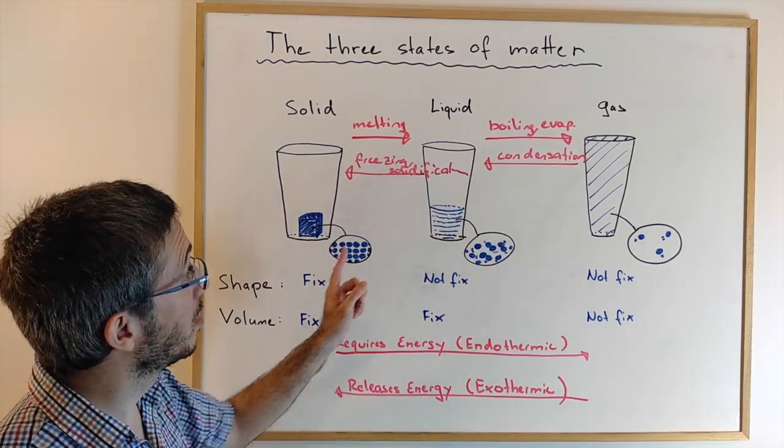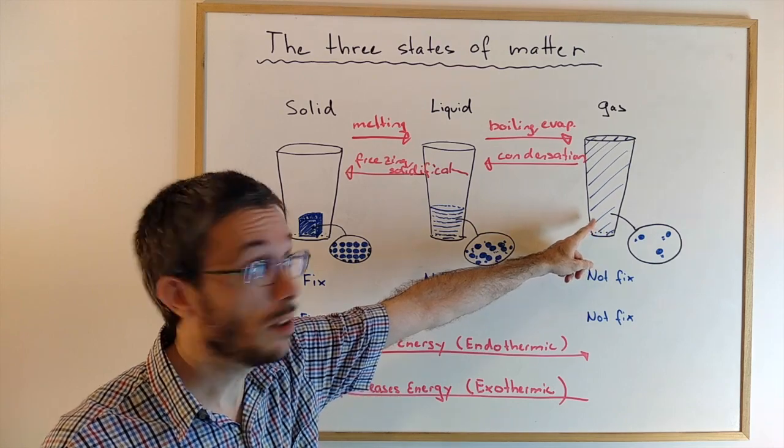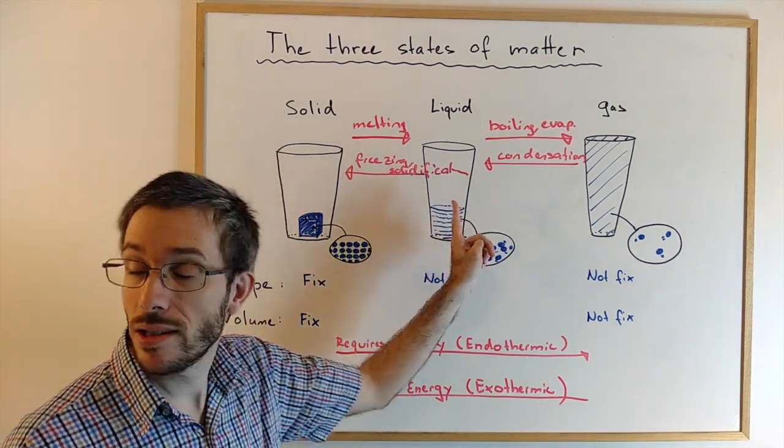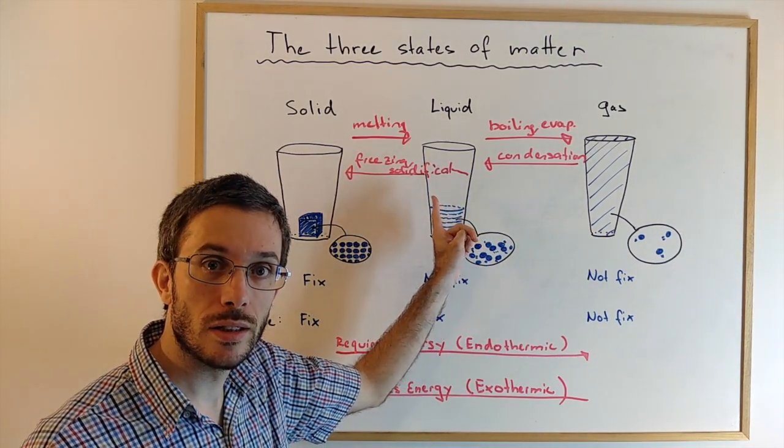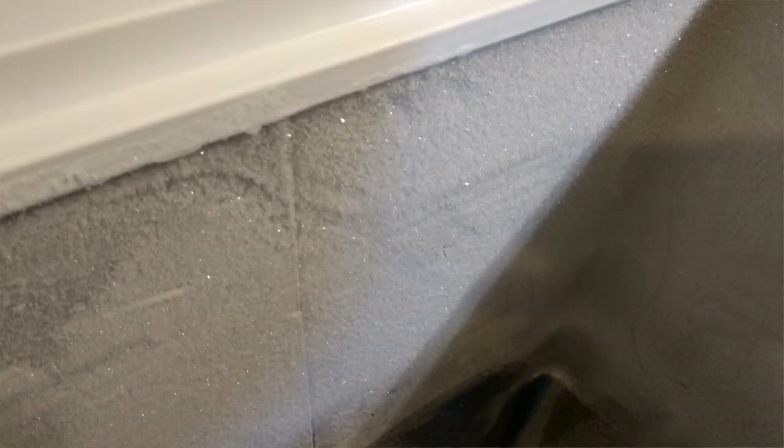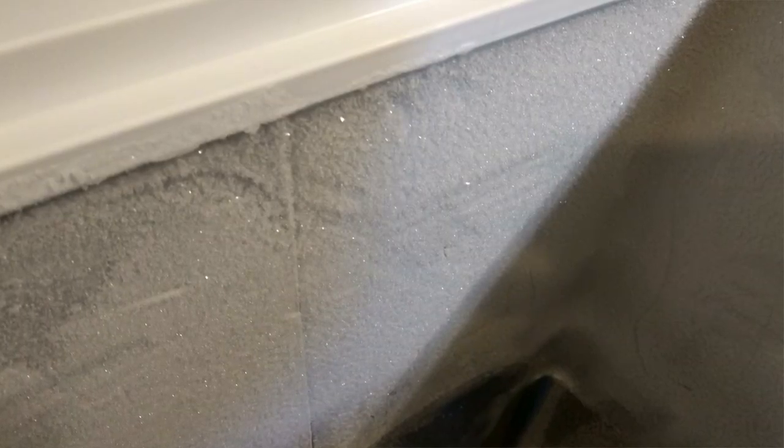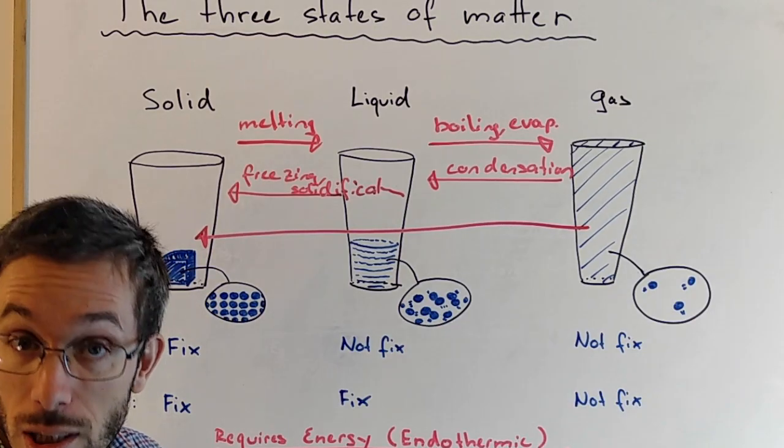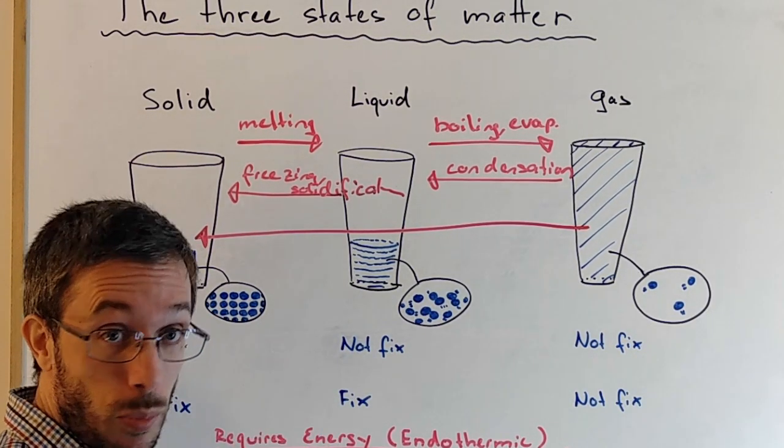But did you know that a gas can directly become solid without passing through the liquid state? It can. For example, at the entrance of a freezer, if there's some humid air that comes in contact with a very cold surface, the water in the air can directly form a solid, which you can see as this little white ice around the top of the freezer. This process is called deposition.